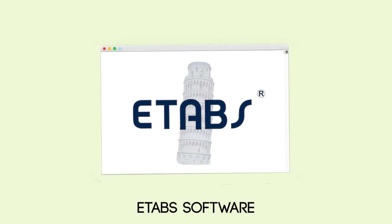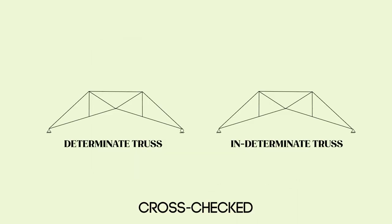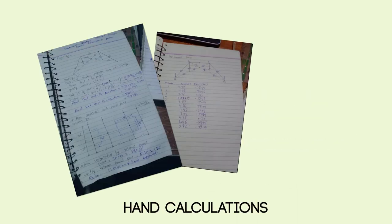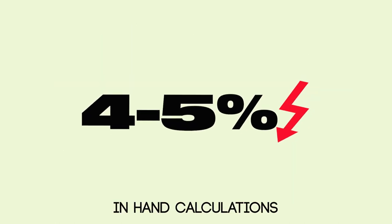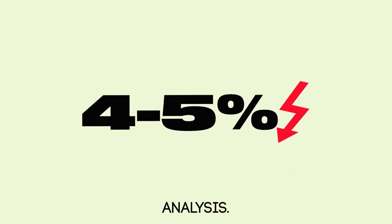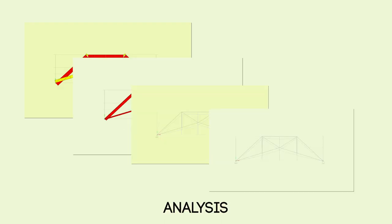Then by using ETAB software, we analyzed both of the trusses and cross-checked our analysis by hand calculations. There is about a 4 to 5% difference in hand calculations and software analysis. Here are the results we got from the software analysis.